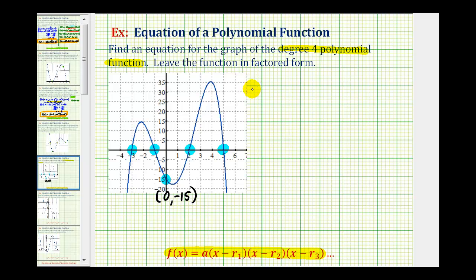We'll have f of x equals a times, if one of the zeros is x equals negative three, then the factor must be x minus negative three, or x plus three. If one of the factors is x equals negative one, then a factor must be x minus negative one, or x plus one.